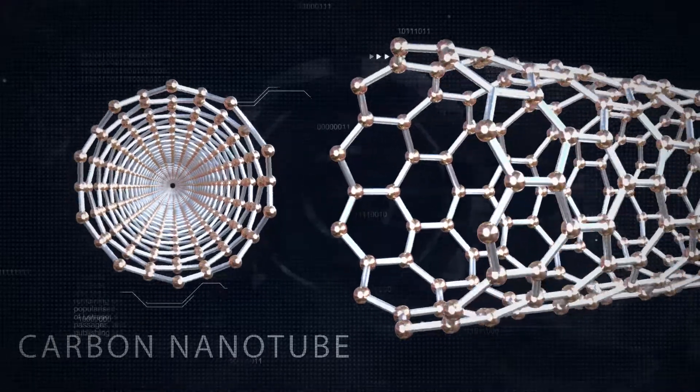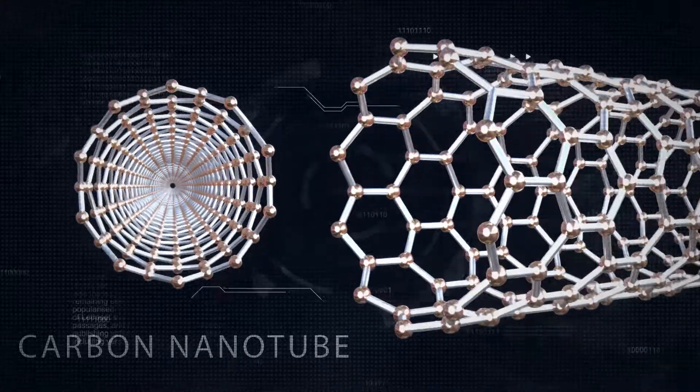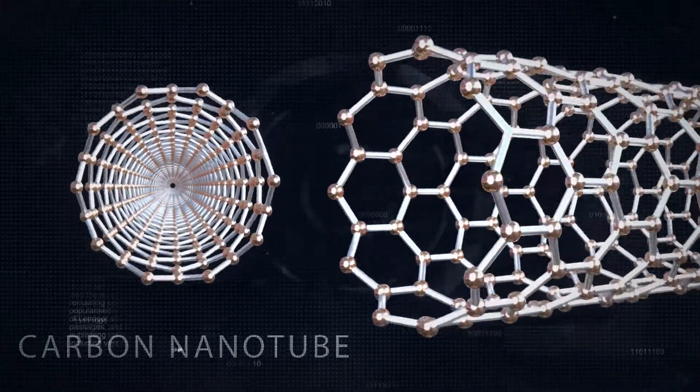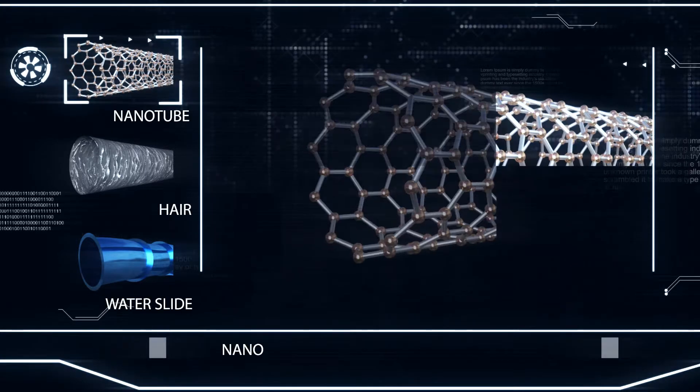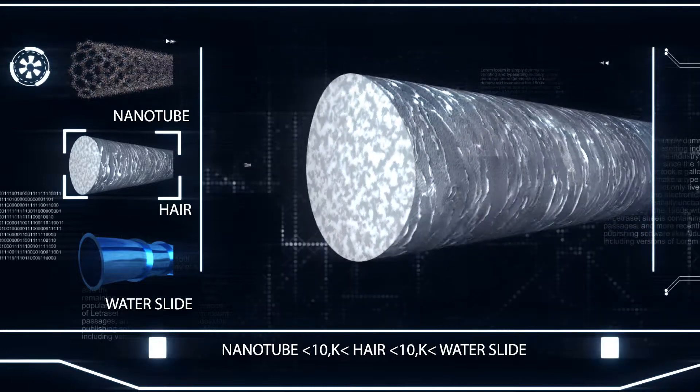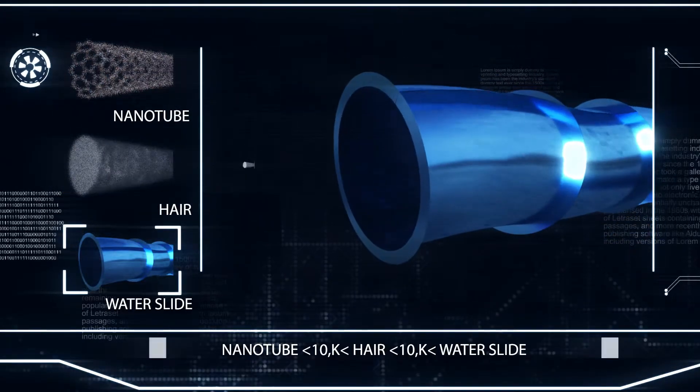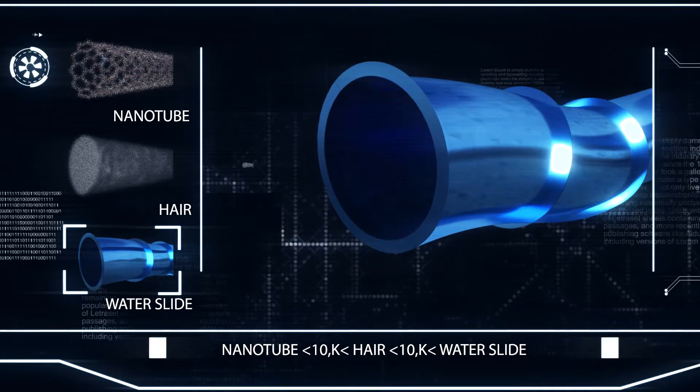Carbon nanotubes, often referred to as CNTs, are cylindrical structures of pure carbon with walls just one atom thick. On a scale of things, the diameter of carbon nanotubes are 10,000 times smaller compared to human hair, which is 10,000 times smaller than the average diameter of a water park slide.